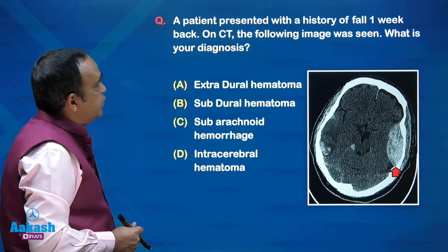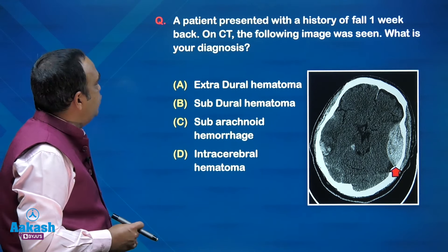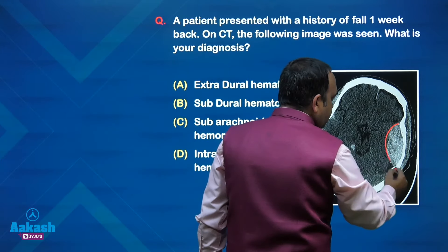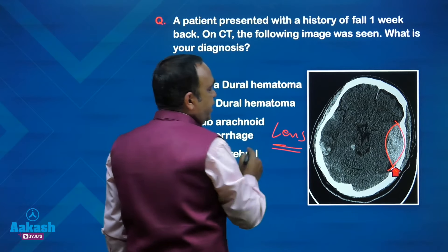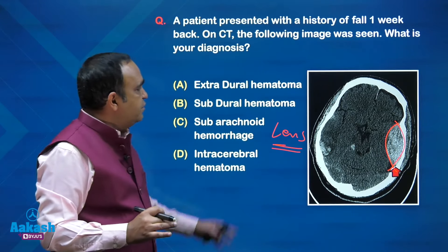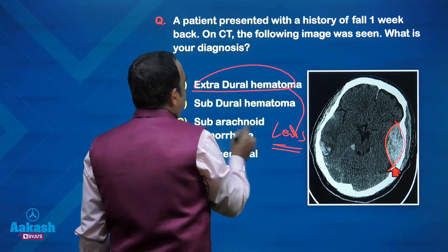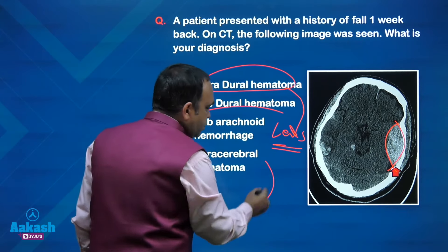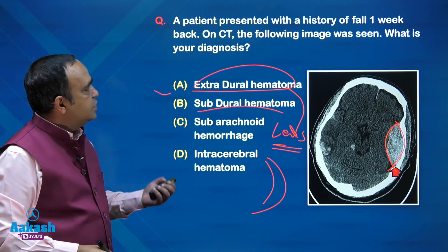A patient with a history of fall one week ago — on CT the following image was seen. What is the diagnosis? It shows a classical lens-shaped (lenticular) biconvex hematoma, which is seen in epidural hematoma (EDH). In subdural hematoma (SDH), the hematoma is concavoconvex — that is the shape seen in SDH.